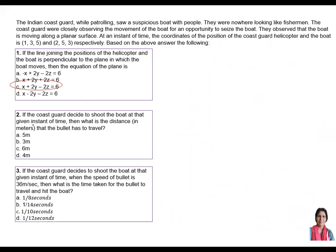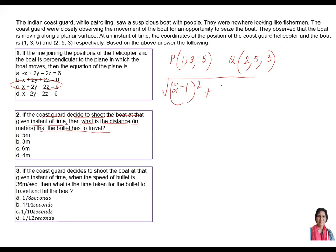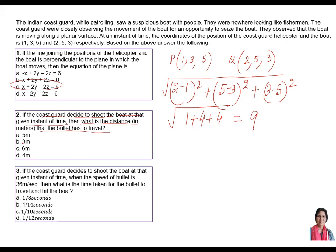Now coming to part two. If the Coast Guard decides to shoot the boat at the given instant of time, what is the distance the bullet has to travel? You have to find the distance between (1,3,5) and (2,5,3). Using the distance formula: √[(2−1)² + (5−3)² + (3−5)²] = √[1 + 4 + 4] = √9 = 3 meters. So the answer is 3 meters, and B is the answer.